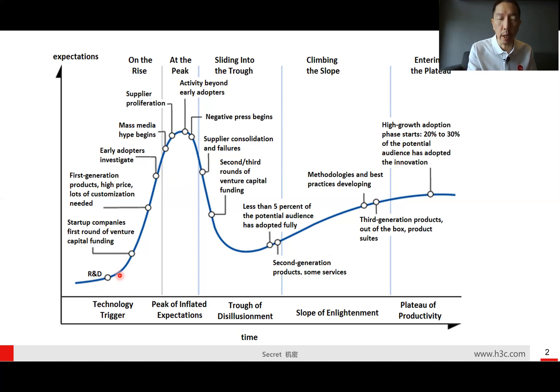You can see the Y-axis is expectations and the X-axis is time. When the technology comes - remember hyperconverged, the concept started around 2010 and after that in 2015 it may reach the peak with some new product releases.